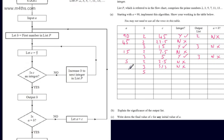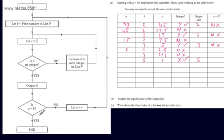We output B — B is 5. Is A equal to B? A is 5, B is 5 — the answer is yes. So we end at this point.